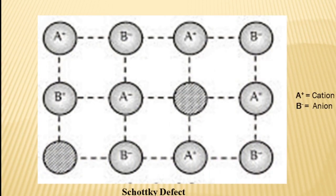This is a picture of Schottky defect. Here, one cation A-plus is missing from its position and one anion is also missing from its position — that is why this is Schottky defect. The number of positive and negative ions remains the same, meaning the ionic crystal remains electrically neutral. So in these stoichiometric defects — both Schottky and Frenkel — electrical neutrality is maintained as well as stoichiometry is also maintained.